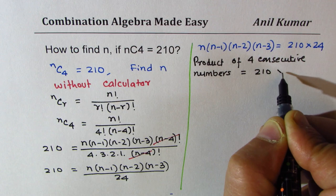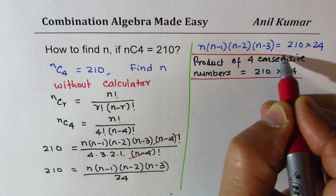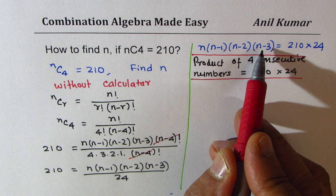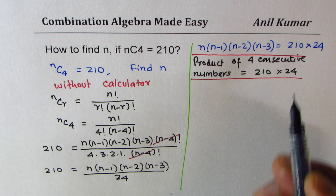That is what we are looking for. We are looking for product of 4 consecutive numbers. These are 4 consecutive numbers in a sequence which should result into 210 times 24. Now I have a neat solution to this.